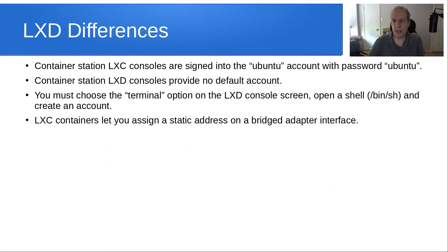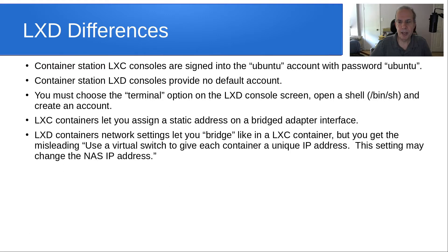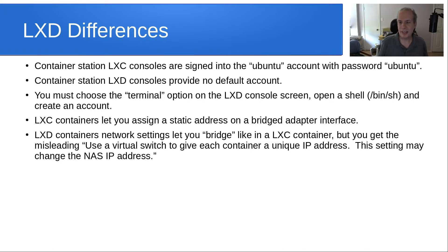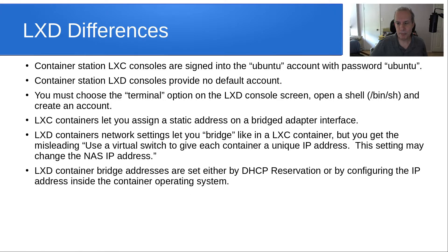LXC containers let you assign a static address on the bridged adapter interface in the container station GUI. LXD containers' network settings let you bridge just like you can in an LXC container, but you get this misleading message that says 'use a virtual switch to give each container a unique IP address — this setting may change the NAS IP address.' I don't think even QNAP knows what that means. LXD container bridge addresses are set either by DHCP reservation at your network end, or by configuring the IP address inside the container operating system.